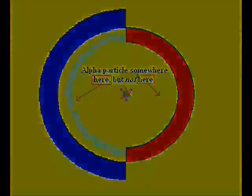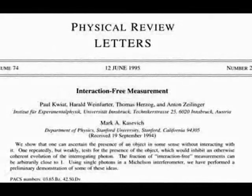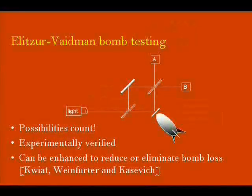The Renninger negative result experiment belongs to a class of experiments involving interaction-free measurement. Another such thought experiment, the Ehlers-Webren-Bohm tester, can astonishingly determine the properties of an object by not looking at it.